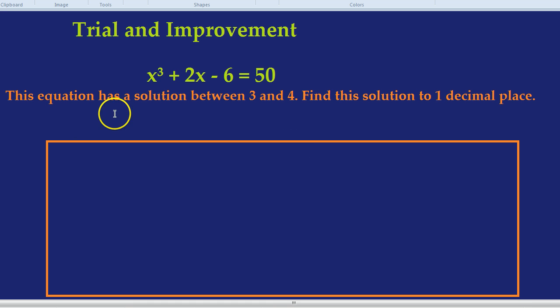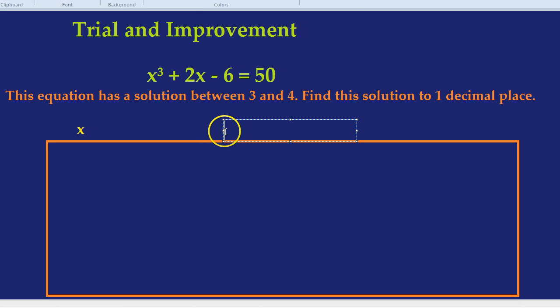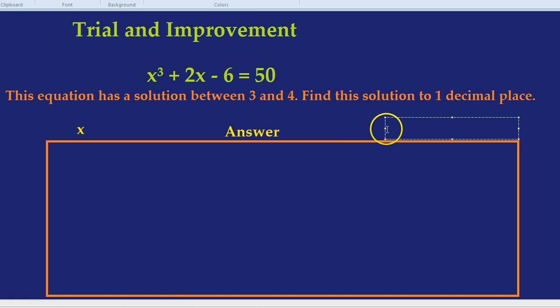What is this table then? The first column is where we place our attempt, as in the number that we're going to use. Here, because we're talking about x's, this can be our x column. Our next column is going to be the answer that we get when we use that x in the equation. And our final column is our conclusion, as in our comment on what our answer was. Was it below 50, bigger than 50, or exactly on 50? I'll be honest, in trial improvement you're rarely going to be exactly on 50. You're usually going to be a bit too small or a bit too big.